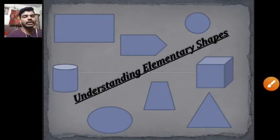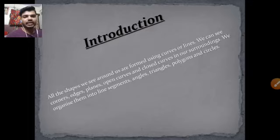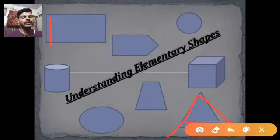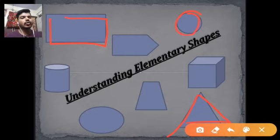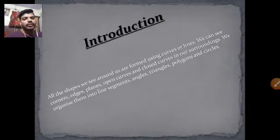We make all elementary shapes with the help of either lines or curves. For making a triangle, we use three lines. For making a rectangle, we use four lines. For making a circle, we use a closed curve — circle is made up of a closed curve. We organize shapes into: line segment, angle, triangle, polygon, and circle.